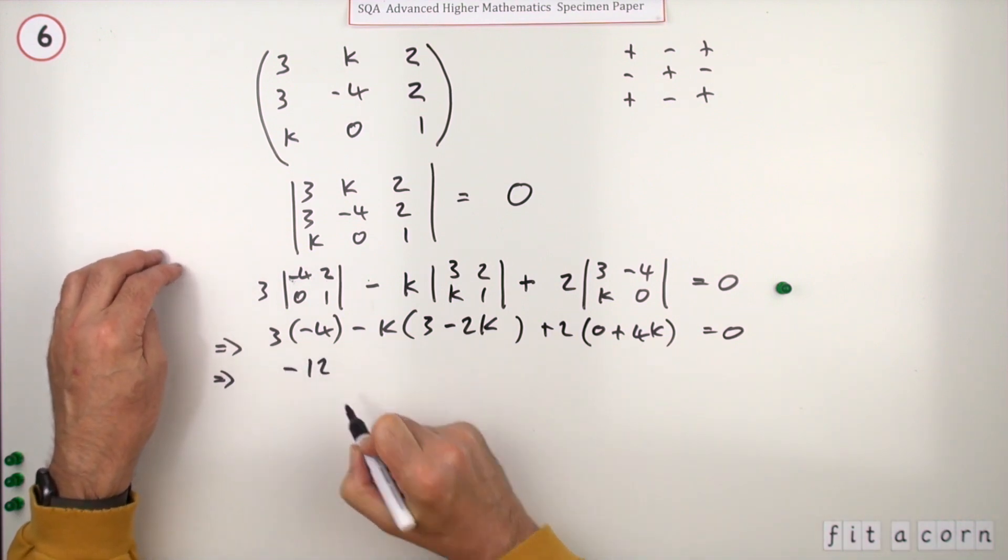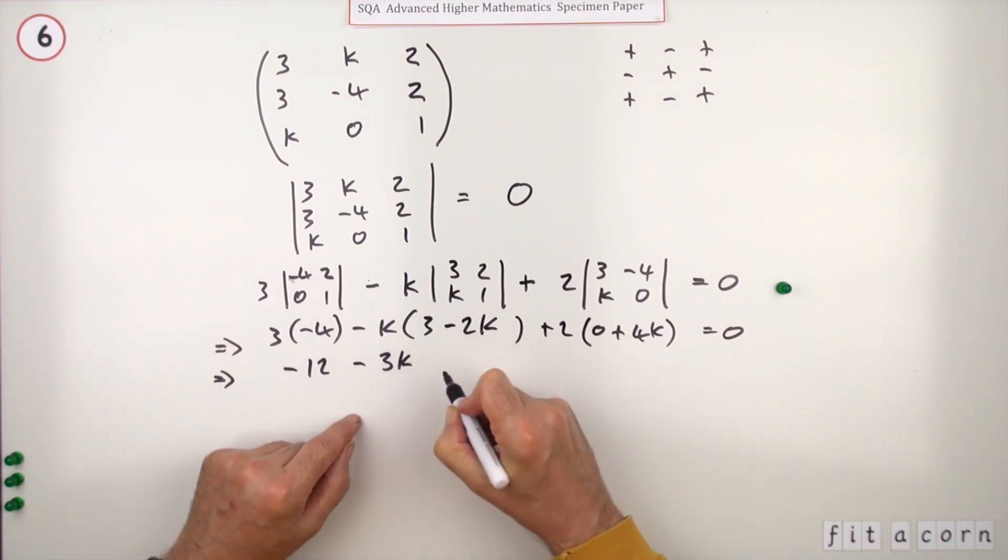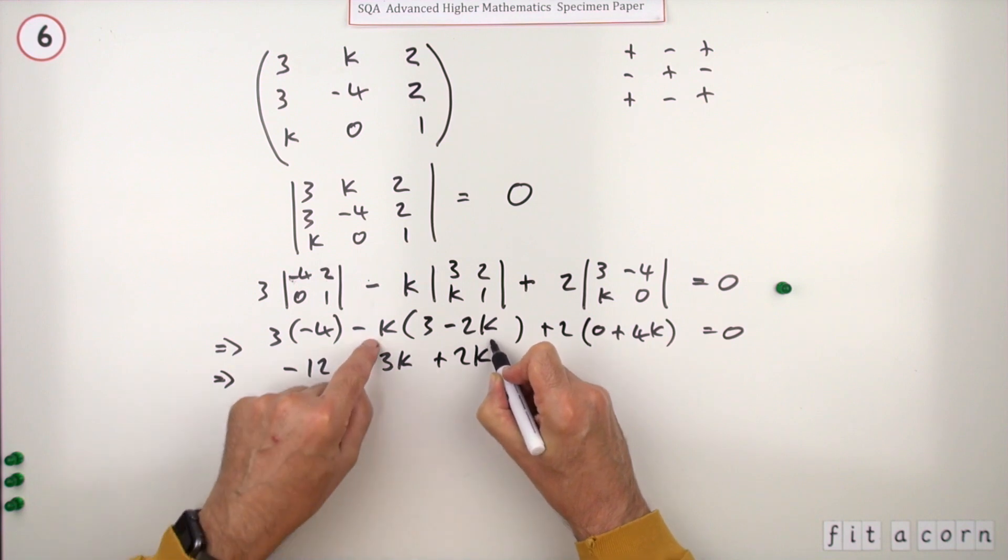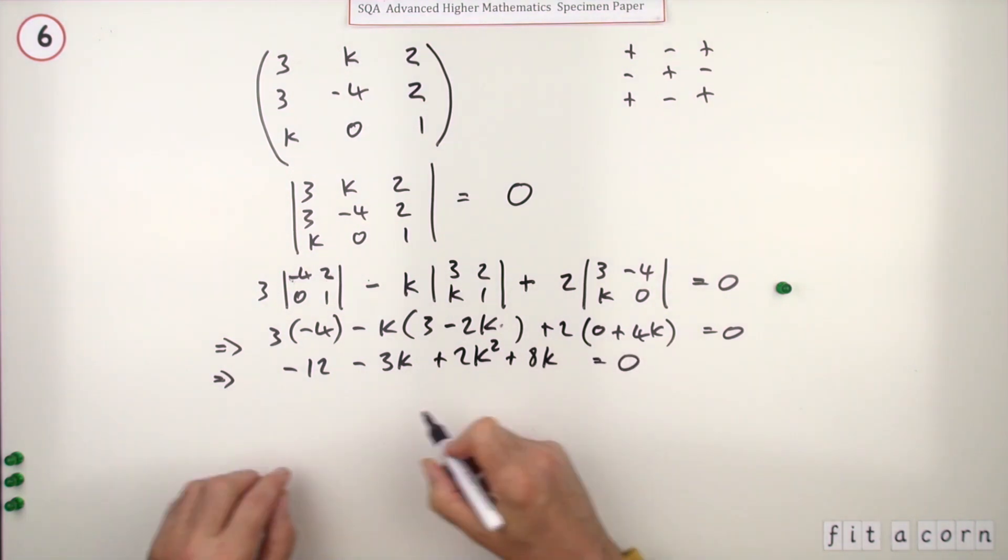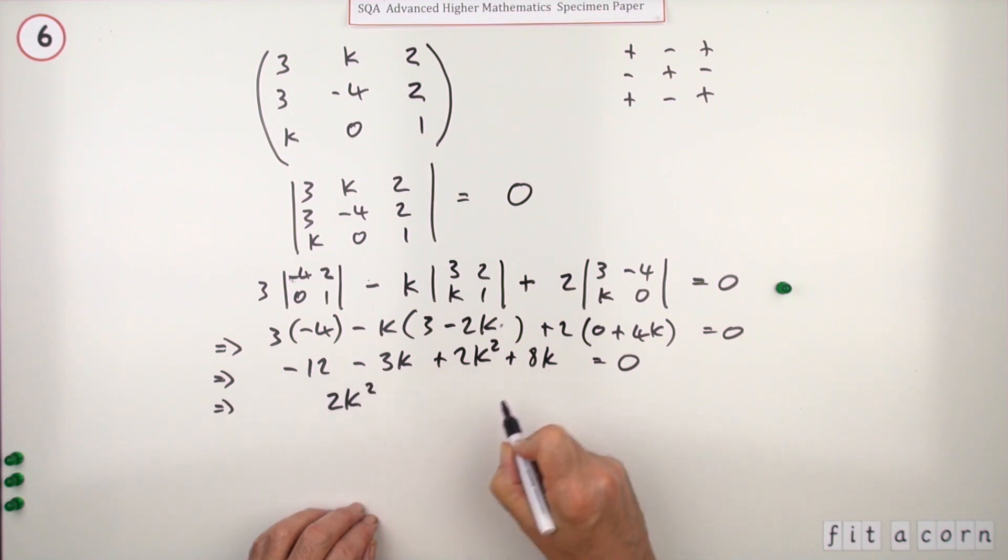So that means you've got negative 12 minus 3k plus 2k squared plus 0 plus 8k. And if I tidy that up to the final quadratic, that's 2k squared plus 8 minus 3 is plus 5k minus 12 equals 0.